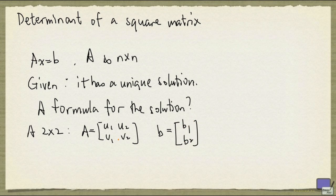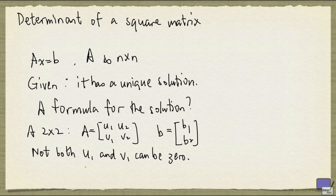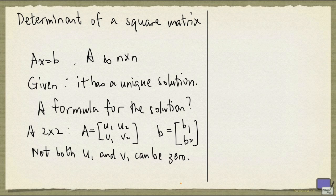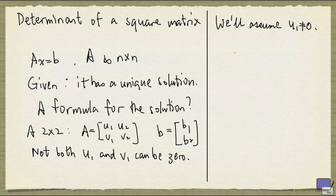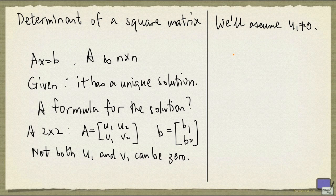Because Ax equal to b has a unique solution, we cannot have u1 and v1 both be 0, because otherwise there's either no solution or infinitely many solutions, because we can set x1 to anything we want. So at least one of u1 and v1 must be non-zero. And we'll assume that u1 is non-zero. You can do similar calculations assuming v1 to be non-zero instead. And I encourage you to give that a try. You should come to the same conclusions.